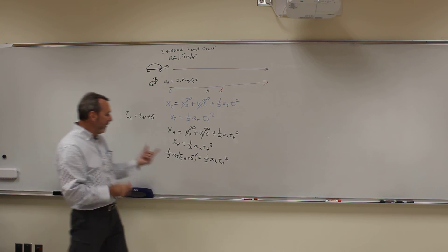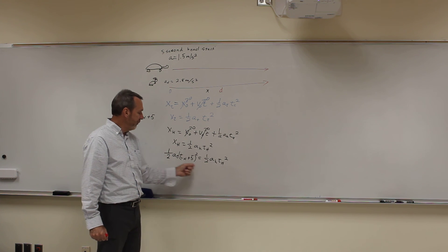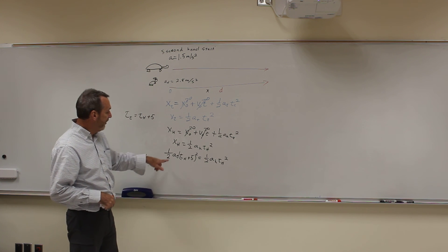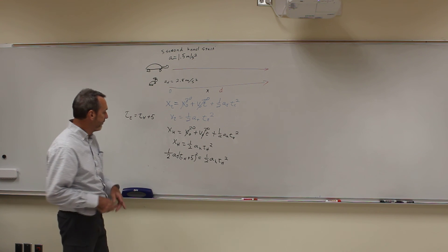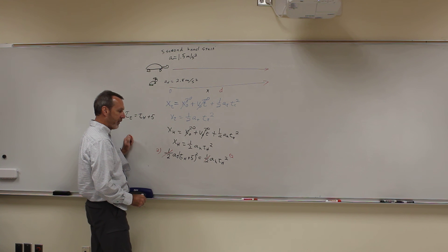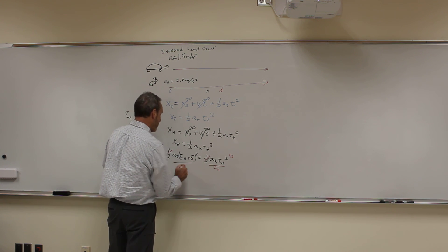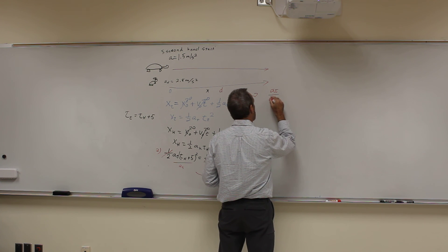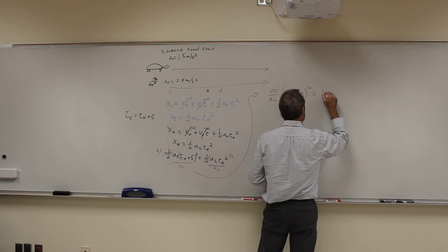The reason I did that is I had to get rid of a variable — I need to get this down to one variable. If I had both tortoise time and hare time, I couldn't solve it. But expressing everything in terms of the hare's time, I can solve for it. I multiply both sides by 2, making the 1 half go away, then divide both sides by the acceleration of the hare. I end up with: a-tortoise over a-hare times (t-hare plus 5) squared equals t-hare squared.